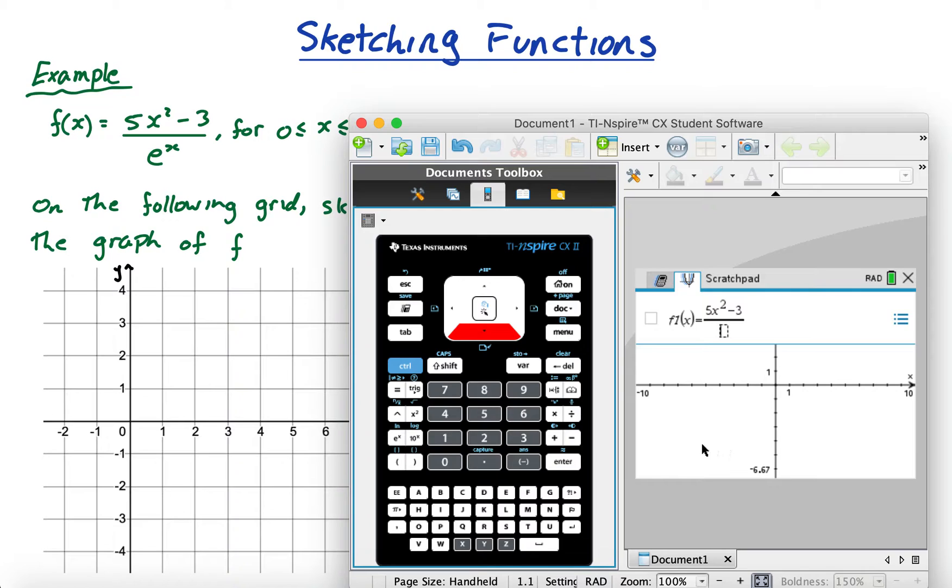I'm going to go with 5x squared minus 3 divided by e to the x. Use this e to the x, don't use this e because it won't give you the right answer. This is a special e, Euler's constant. Press enter and I get this.